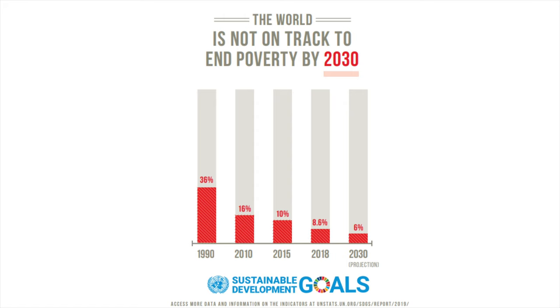In the last three decades, the world has made massive progress when it comes to human development. More than one billion people have risen out of extreme poverty. 36% of the world's population used to live in extreme poverty in the year 1990, and it has fallen to just 8.6% in the year 2018.